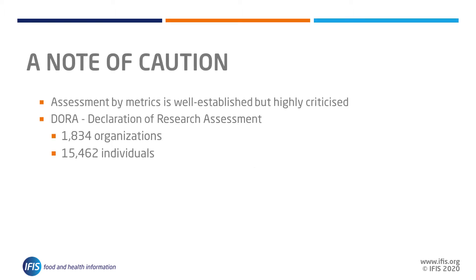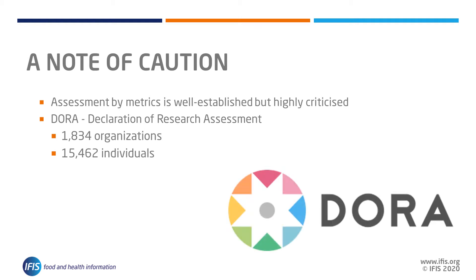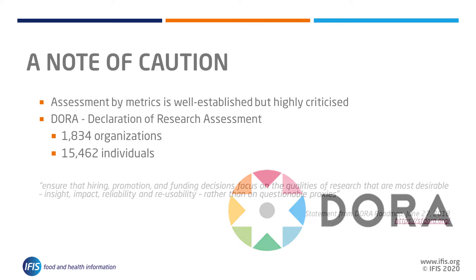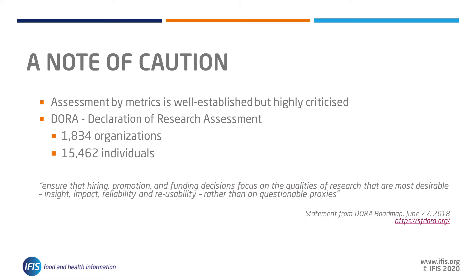This situation is well established but highly criticized. The San Francisco Declaration of Research Assessment, referred to as DORA, is signed by over 1,800 organizations. It cautions against using journal-level citation metrics as a means of assessing individuals and research articles alone. However, we acknowledge that metrics play an important part in deciding where to publish and how researchers are assessed.